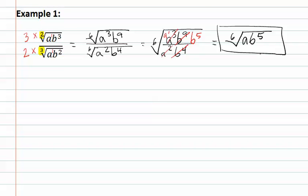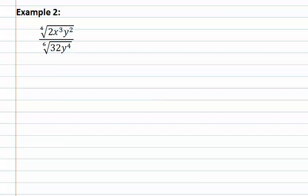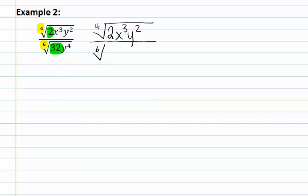Let's look at how this applies in example 2. Our two indexes are 4 and 6. We must find their least common multiple, but remember the hint: first we must factor any numbers that appear inside of a radical — meaning the 32 or the 2. 2 does not factor at all, so we simply have 2x to the 3rd, y to the 2nd. And in the denominator, we have the 6th root, and 32 becomes 2 to the 5th, and the y to the 4th stays.